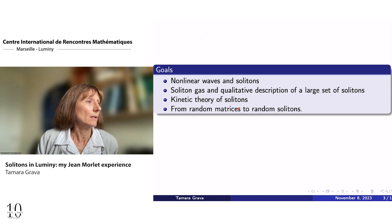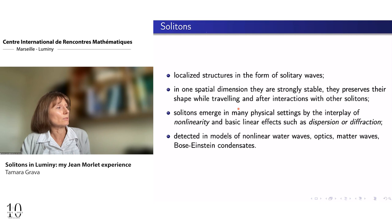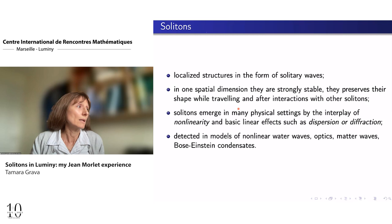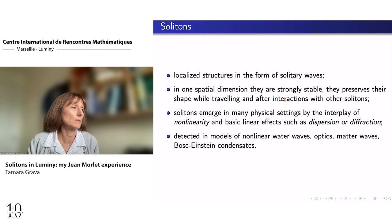Okay, so what are solitons? So solitons are localized structures, and they form solitary waves that travel at constant speed. In one spatial dimension, they are strongly stable. So they preserve their shape while traveling, and also after the interaction with other solitons. So this is the main feature of solitons. They emerge in many physical settings, and they are the production of the interplay between nonlinearity and dispersion. Linear effects that can be both dispersion and diffraction. And they can be detected in many models of nonlinear waves.